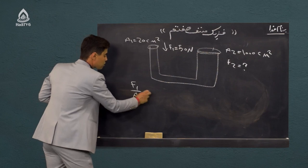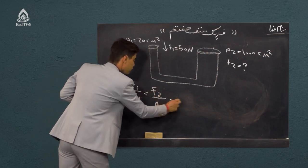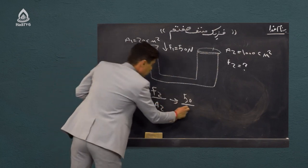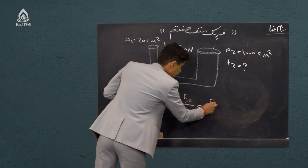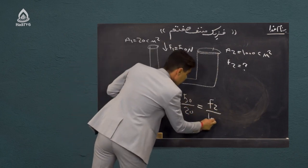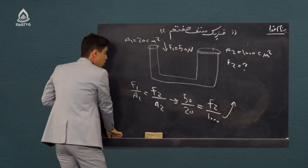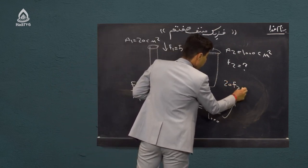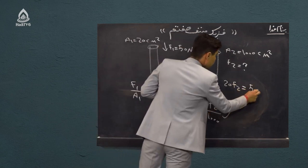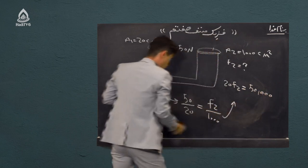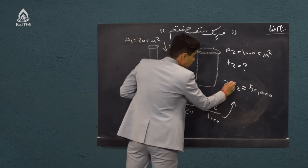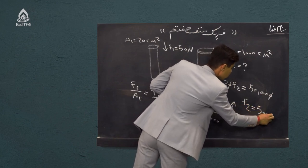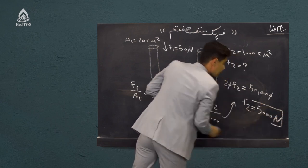رابطه را مینویسیم: F1/A1 = F2/A2. F1 پنجاه نیوتن، A1 بیست، F2 مجهول، A2 یک هزار. با ضرب دو طرف: بیست × F2 = پنجاه × هزار = پنجاه هزار. با اختصار یک صفر از هر طرف: F2 = پنج هزار نیوتن.